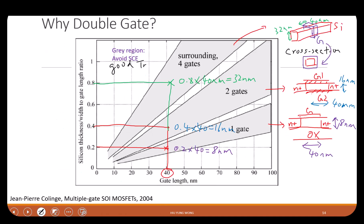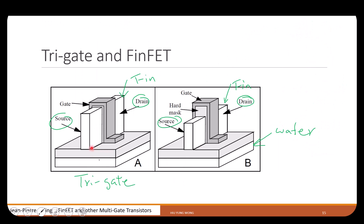Comparing to the four-gate structure shown earlier, the FinFET is similar except it doesn't have the bottom gate. There is a hard mask on top due to manufacturing reasons — people were not able to make the fin gate there, so the hard mask is left, giving very bad gate control. So you effectively have two gates, one on each side. That is called FinFET — like the fin of a fish.